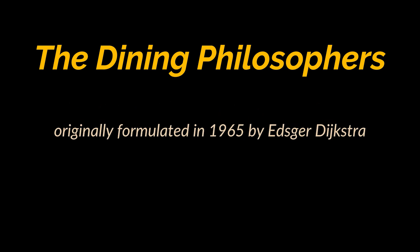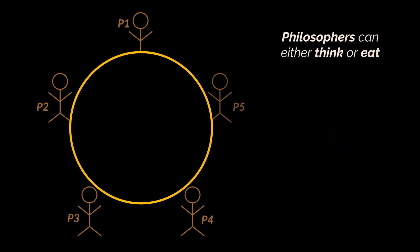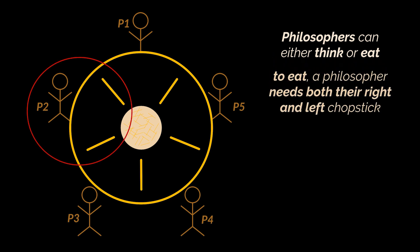The problem states that five philosophers are sitting around a circular table, and their job is to think and eat alternatively. A bowl of noodles is placed at the center of the table along with five chopsticks, one for each of the philosophers.